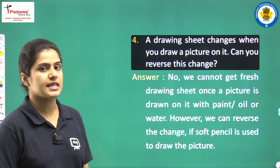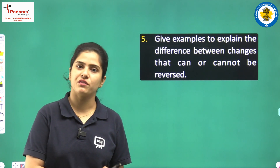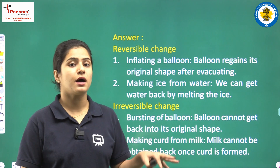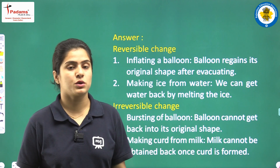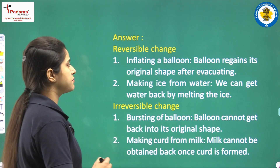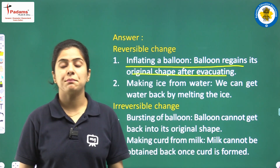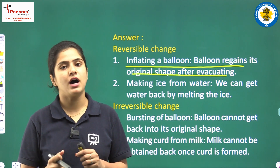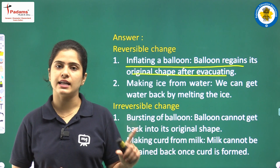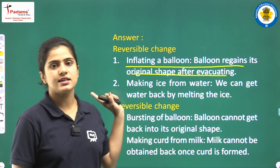The fifth question: give examples to explain the difference between changes that can and cannot be reversed — that is, differentiate between reversible and irreversible changes. Reversible changes are those which we can bring back. For example, inflating a balloon: the balloon regains its original shape after deflating. Aapne ek balloon liya, usme hawa daali. Jaise aap apni finger hatate hain, balloon wapis original position pe pohonch jaata hai. So inflating a balloon is a reversible change.